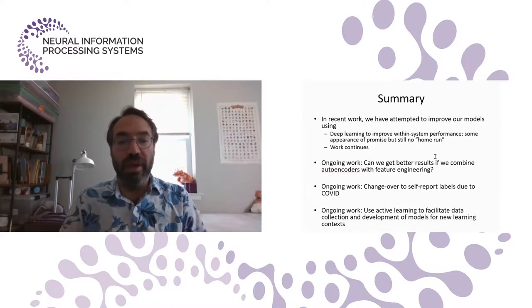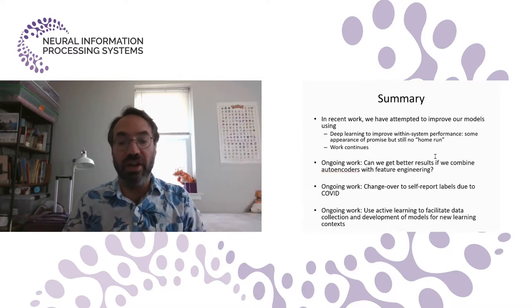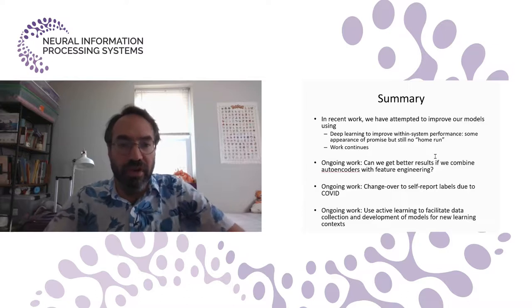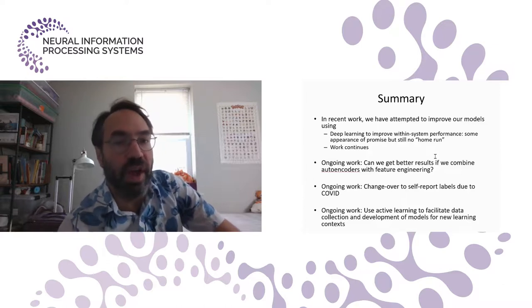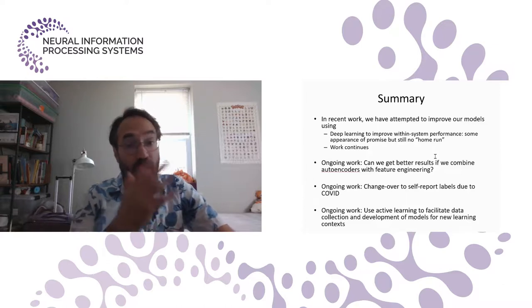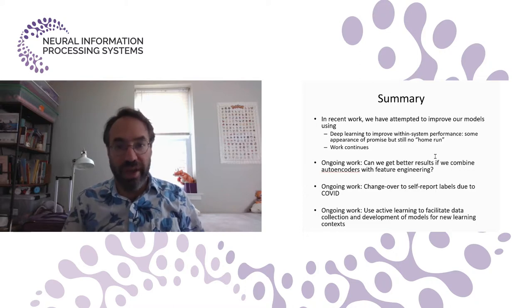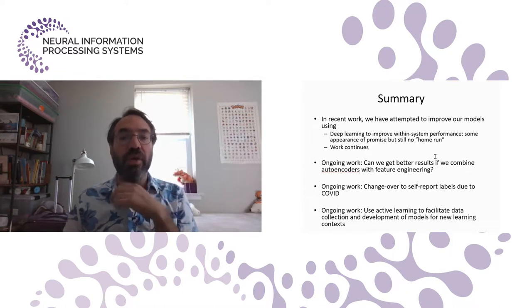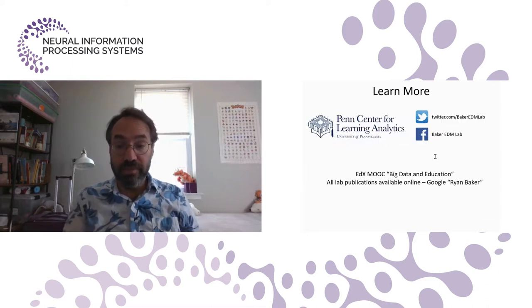As we change over to self-report labels, we're working with Andrew Lan at the University of Massachusetts Amherst to use active learning to facilitate data collection and development of models for new learning contexts. The idea being that we can't ask people for a self-report every five minutes. That will just be horribly miserable for students. And we don't always know when the right time is. So if we can only ask a student, say, once a day or once a week, there's not actually clear literature on how often you can ask students before you annoy the heck out of them and cause problems. If we can only collect a label occasionally, can we have our model collect that label at the best possible time that day or week so we get the best information?